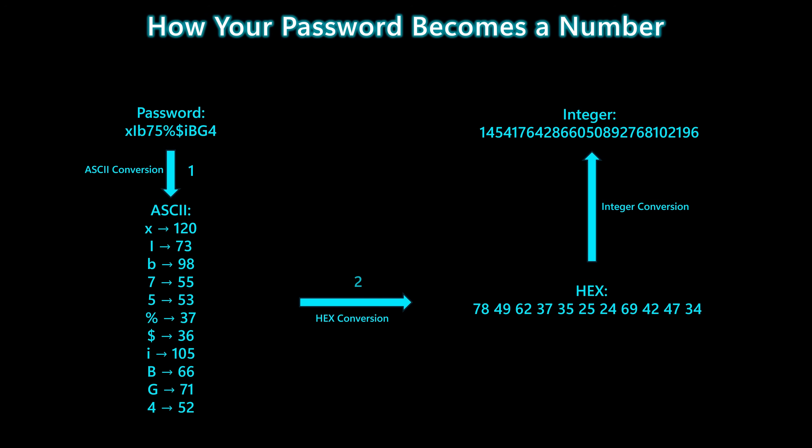Let's walk through what actually happens to your password before it ever touches RSA. The conversion sequence has three steps. Step 1 is ASCII conversion: every character — letters, digits, and symbols — gets mapped to a numerical code. Lowercase x becomes 120, uppercase I becomes 73, lowercase b becomes 98, and the rest of the password converts into its own sequence of ASCII values. Step 2 is hexadecimal conversion: the ASCII codes are packed into bytes and written in hex, forming the exact sequence the computer uses internally.